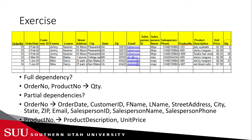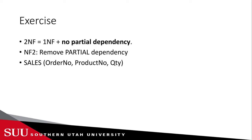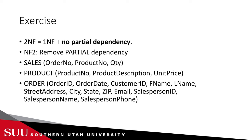We need to remove those dependencies by separating them into their own tables. For second normal form — which is first normal form with partial dependencies removed — we create a sales table with order number, product number, and quantity as one full dependency. A product table with product number, product description, and unit price. And an order table containing the remaining attributes. We underline the keys in each table.